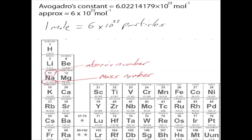It's the mass number that we're going to deal with, because that gives the mass of the overall atom. The atomic number tells you how many protons you have, while the mass number tells you the total of protons plus neutrons together. The mass number represents the overall mass of the element.